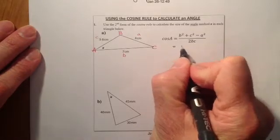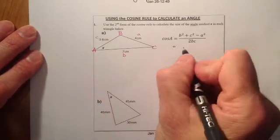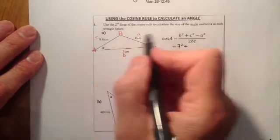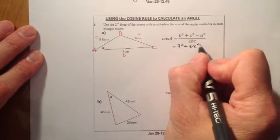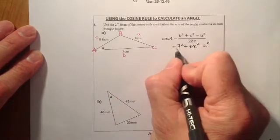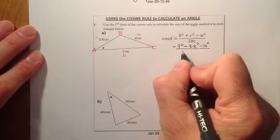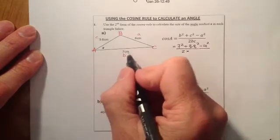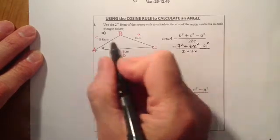Let's substitute our values in. So b is going to be 7 squared, plus c is going to be 3.8 squared, minus 4 squared. That's all going to be over 2 times b, which is 7, times the 3.8.